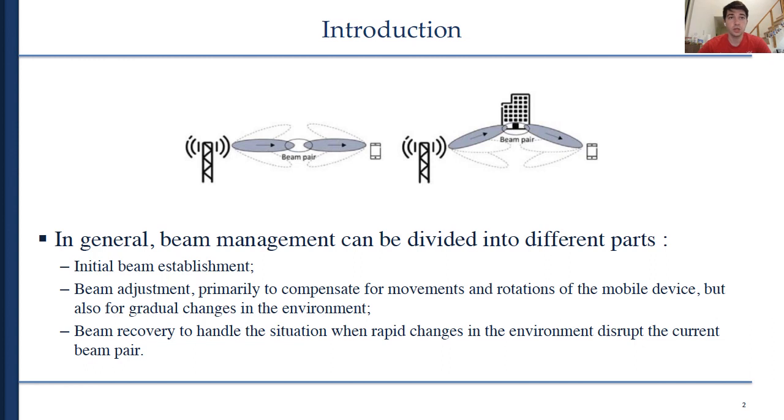A beam pair means a transmitter-side beam direction and the corresponding receiver-side beam direction that jointly provide good connectivity. As illustrated on the figure here, the best beam pair may not necessarily correspond to transmitter and receiver beams that are physically pointing directly towards each other. Due to obstacles in the surrounding environment, such a direct path between the transmitter and receiver may be blocked, and a reflected path may provide better connectivity as shown on the right side of the figure on the slide. This is especially true for operation in higher frequency bands with less around-the-corner expansion. Beam management functionality must be able to handle such a situation and establish and retain a suitable beam pair also in this case.